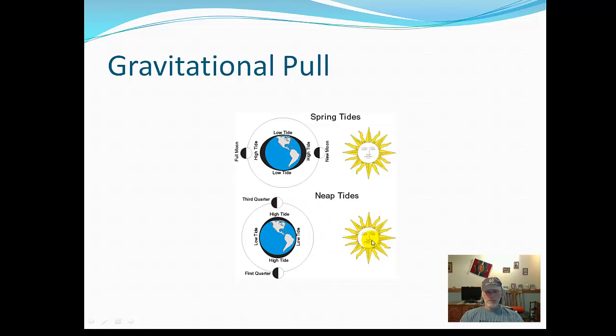On neap tides, you have a bit more of a right angle or an L shape, where you have the sun, the Earth, and then the moon—either third quarter or first quarter—forming a right angle with the Earth.